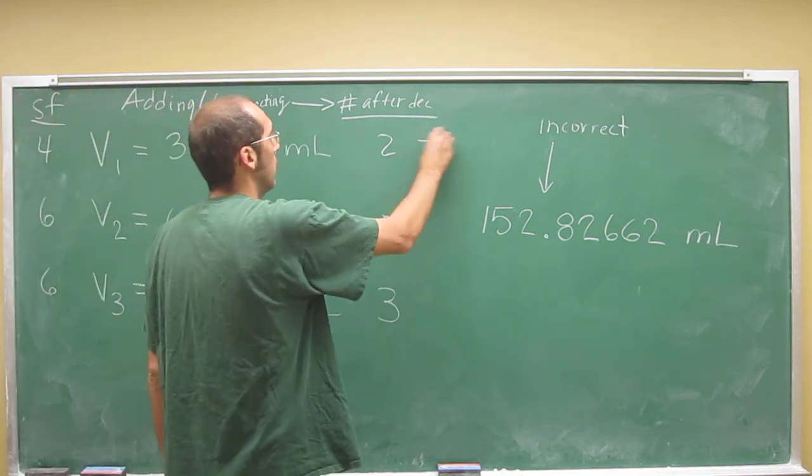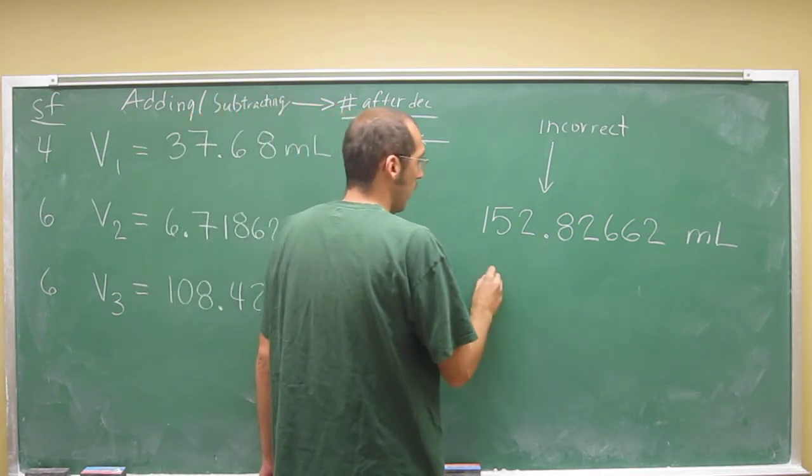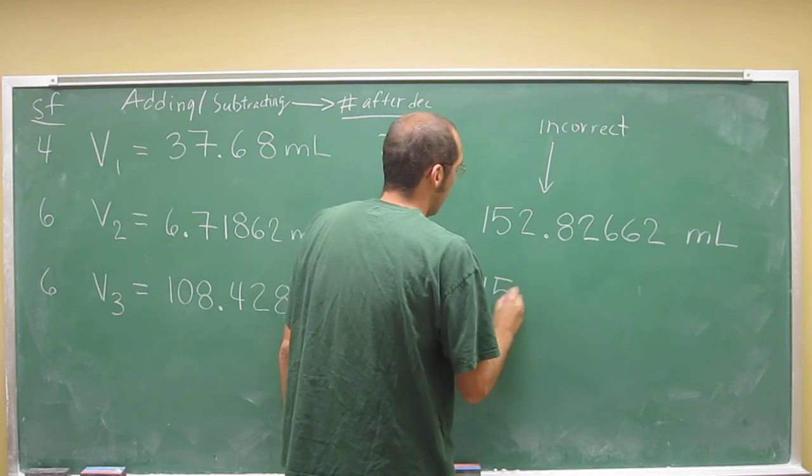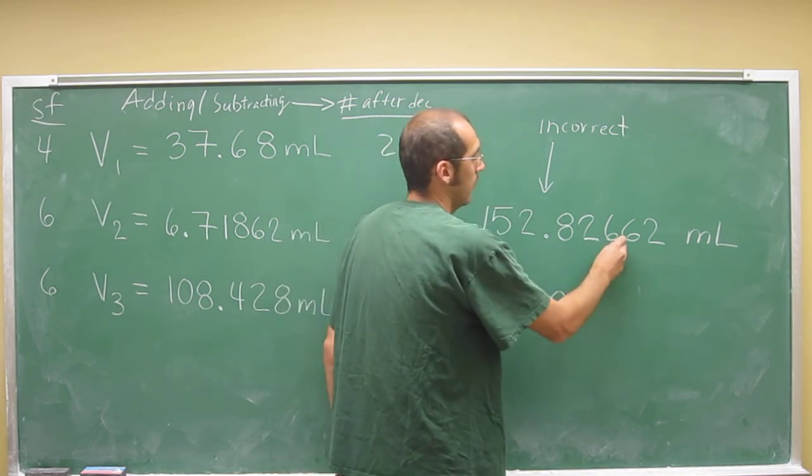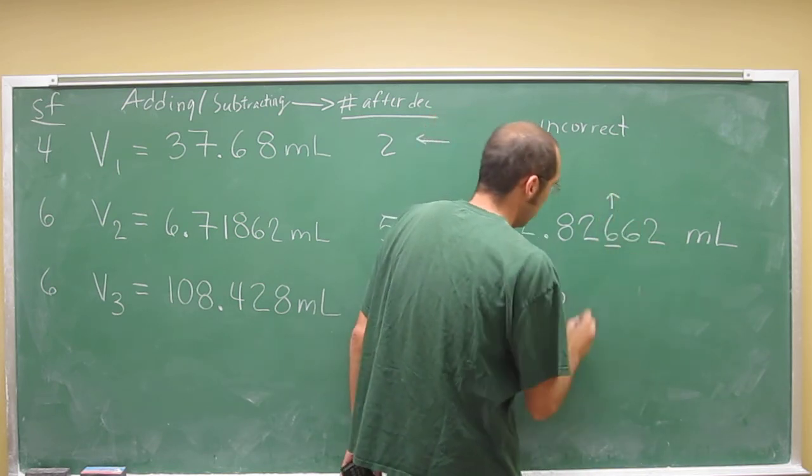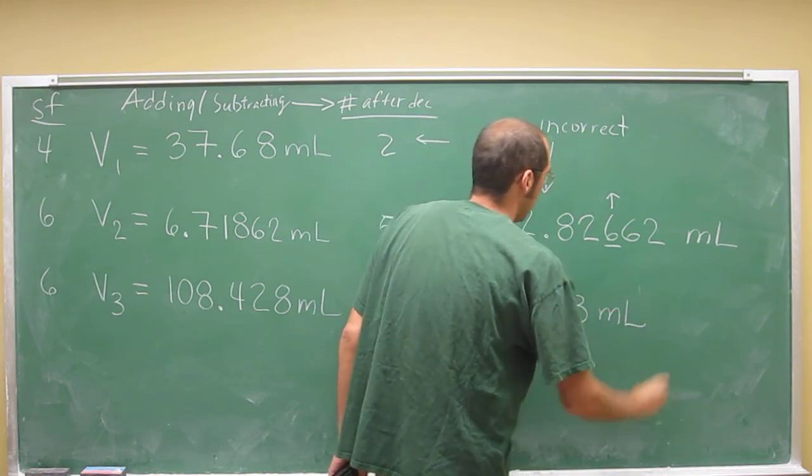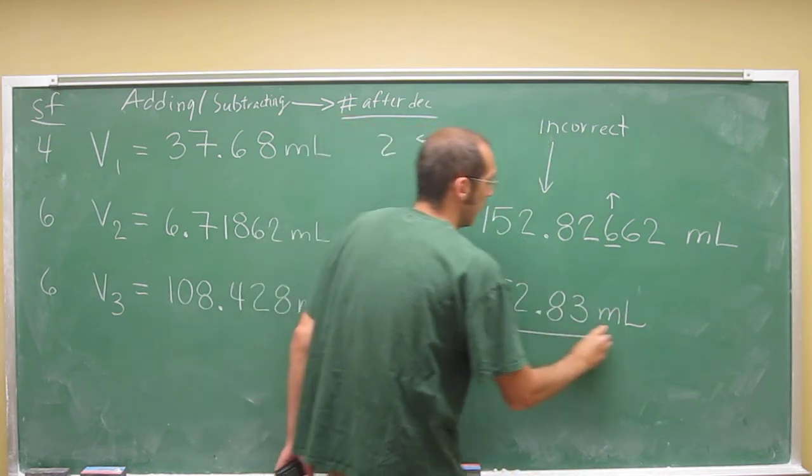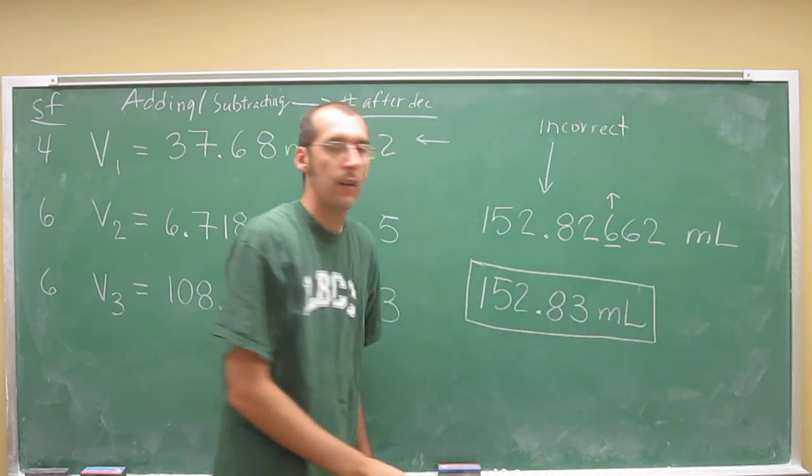We've got to go to 2 after the decimal. So our answer would be 152.8, and then 6 is higher than 5, so we've got to round up. So 152.83 mL. That's reporting your answer correctly.